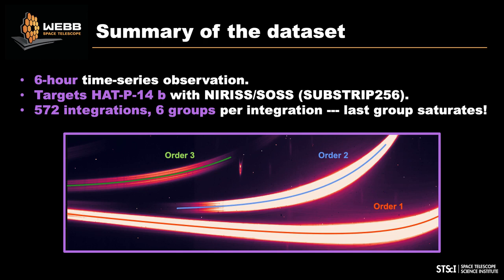This is something to keep in mind when analyzing these data: there's a portion at the peak of the blaze function in order one that saturates. One interesting thing you see here — not even seen in simulations — is that order three and order two have 'comebacks.' You believe they're going away, but then they reappear at the edge. Keep this in mind in terms of any contamination from the orders.